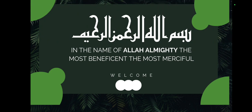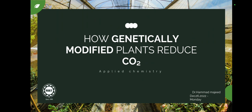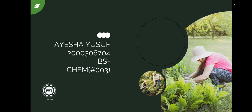Bismillahirrahmanirrahim, assalamu alaikum. I'm Aisha from the department of BS Chemistry. Today I will discuss how genetically modified plants are helpful in reducing CO2 from our environment. We all know CO2 is harmful for our environment, and its increasing concentration is due to increasing vehicles and combustion of fossil fuels, causing pollution in our environment.